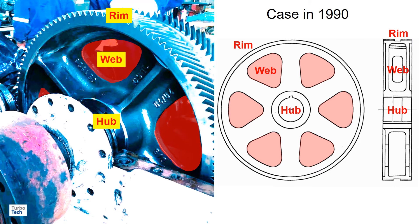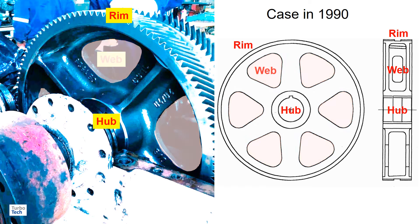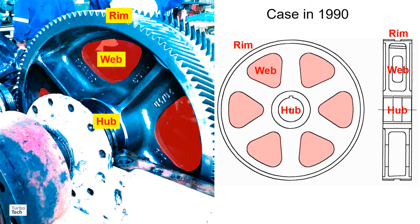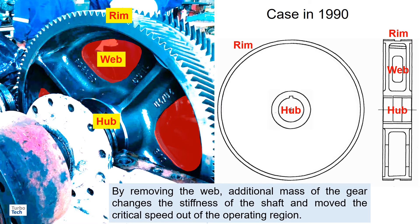In case of torsional vibration issues with gears, adjusting the natural frequency of the gear is an option. For example, one approach involves modifying the gear design, such as removing the web from the gear assembly. By removing the web, additional mass of the gear changes the stiffness of the shaft and moves the critical speed out of the operating region.